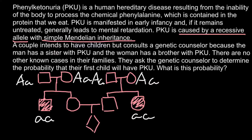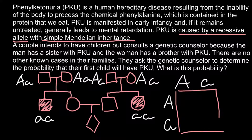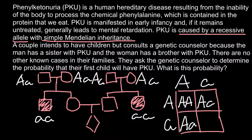Let's return to the genotypes of their parents. Each parent is heterozygous, so when we build the Punnett square we get: AA, Aa, Aa, and aa. We know that the individuals in this couple do not belong to the affected phenotype — otherwise we would already know it. That gives us a probability for each of them to be heterozygous of two out of three, not two out of four, because we know they belong to the normal phenotype.